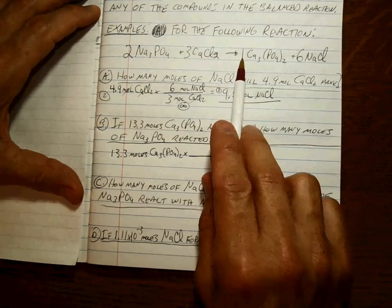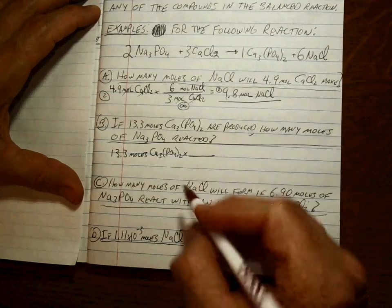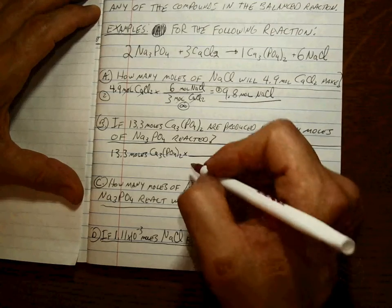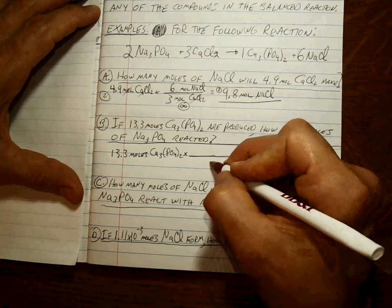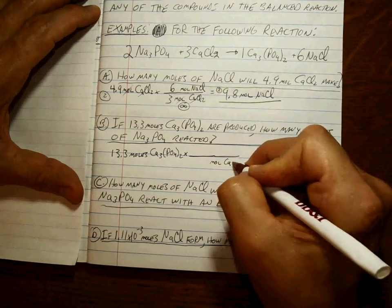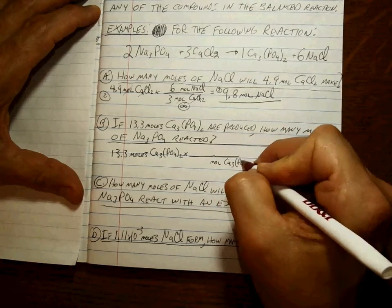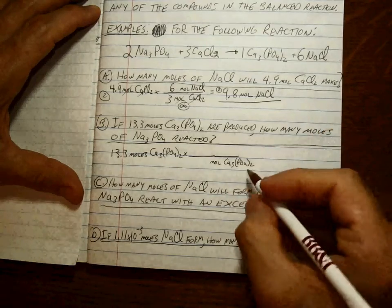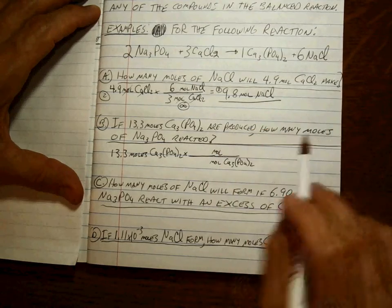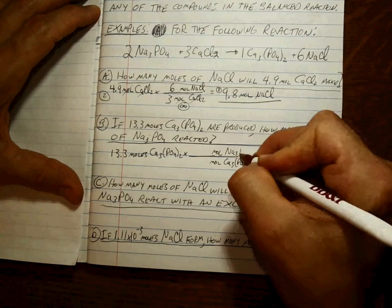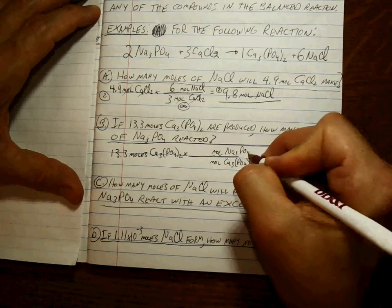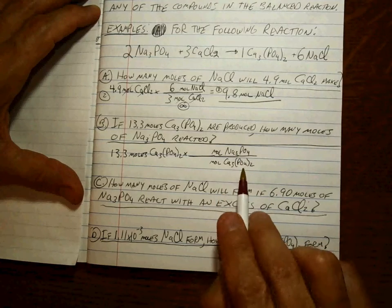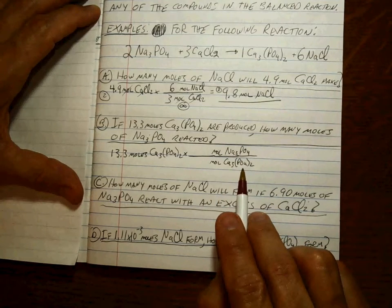And we say to ourselves, we need to compare calcium phosphate with sodium phosphate. That's that ratio. So what number goes on top, what number goes on bottom? Well, in order to get the units canceling, moles of calcium phosphate go on the bottom.